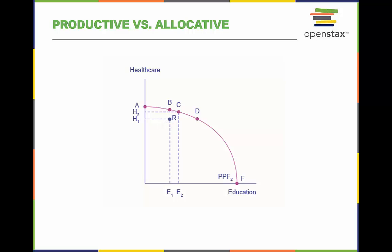Allocative efficiency means that the particular mix of goods being produced, that is the specific choice along the production possibilities frontier, represents the allocation that society most desires.